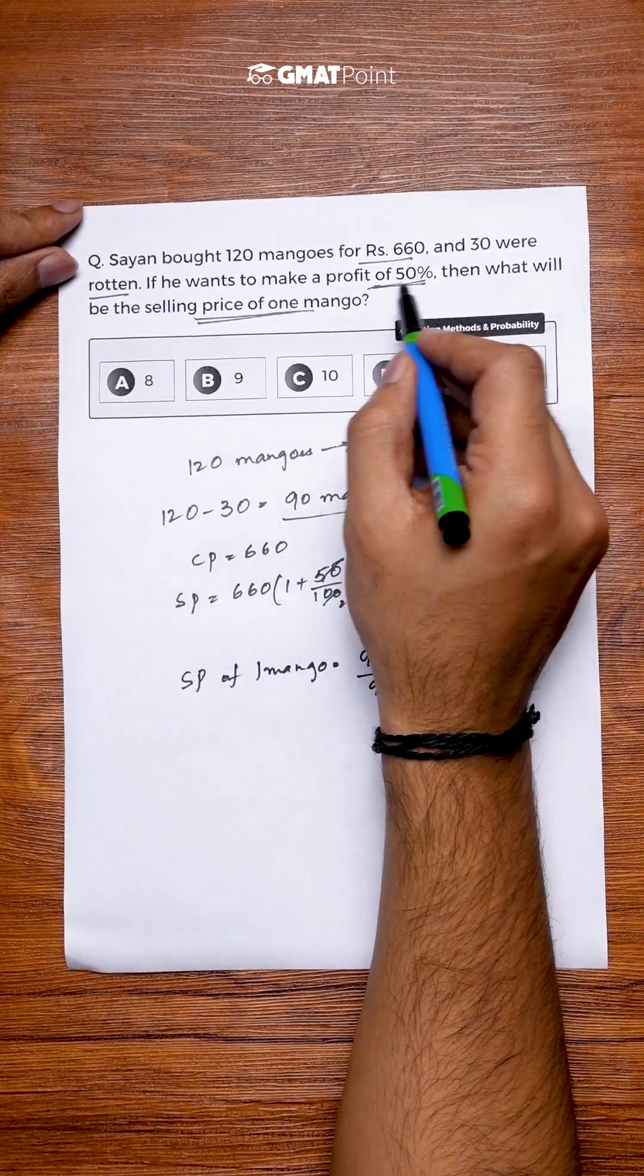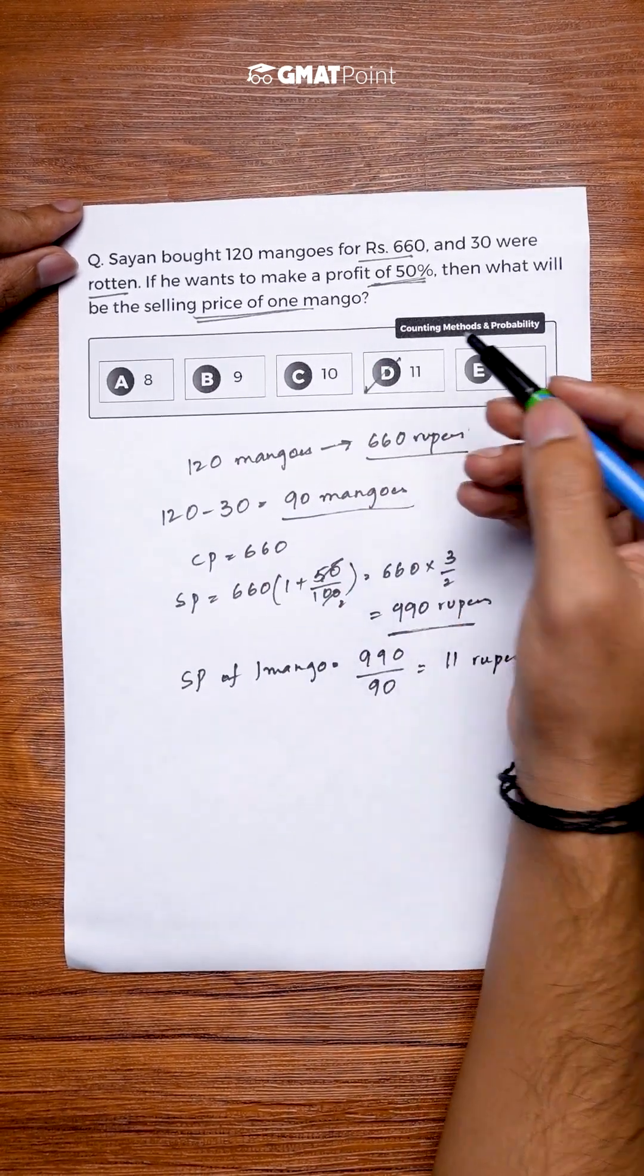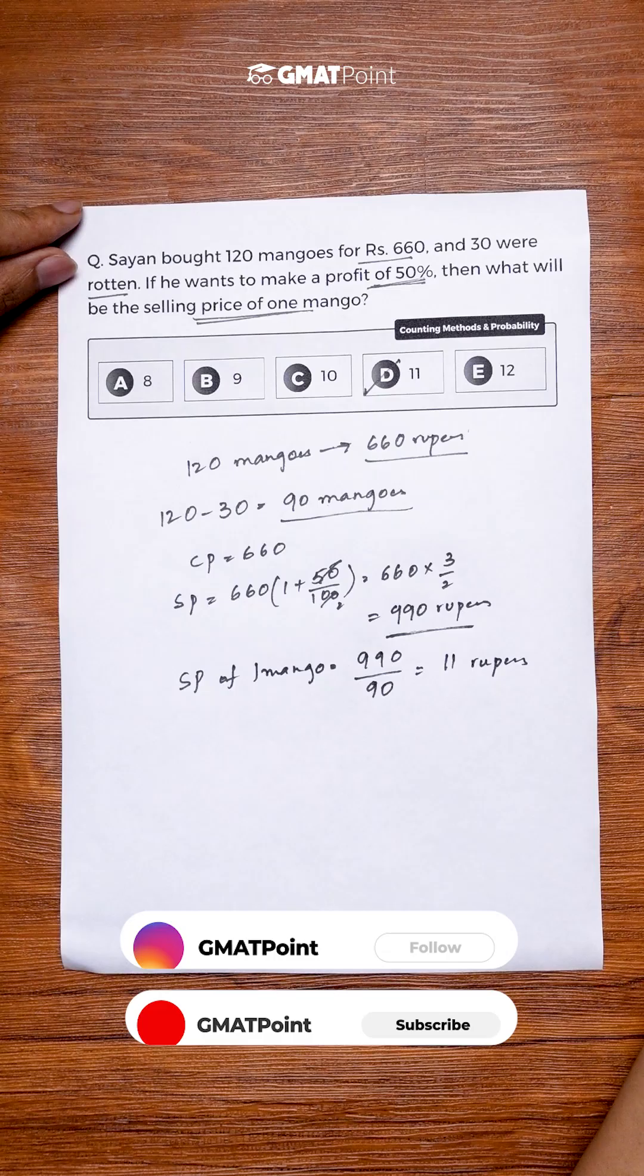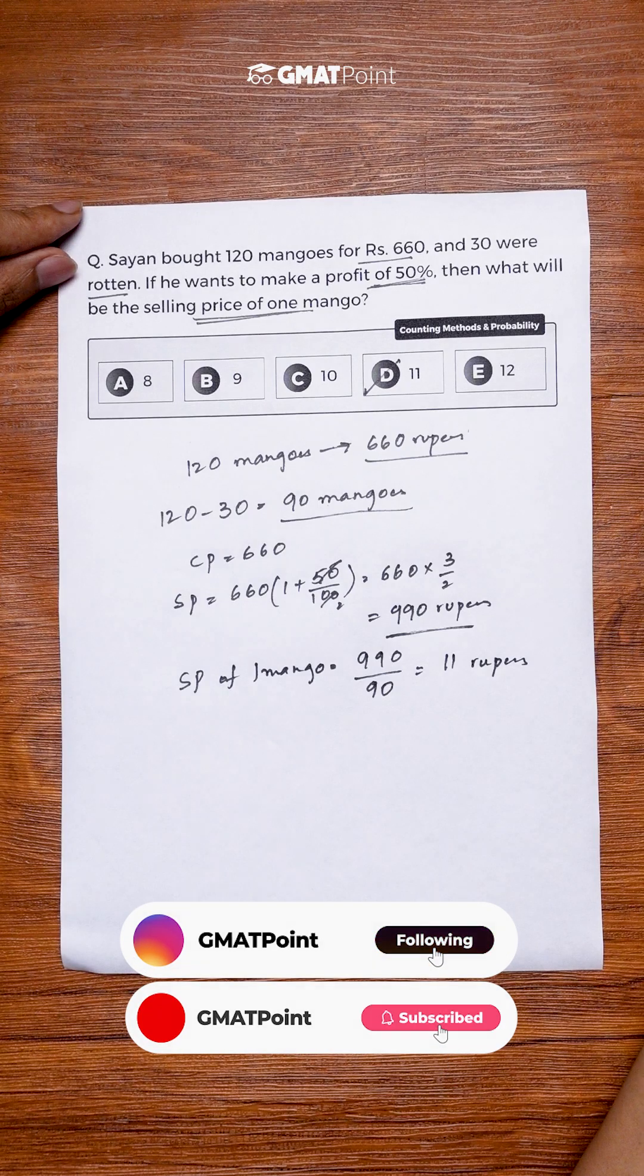So Sayan to make a profit of 50 percent, he will have to sell one mango at 11 rupees. Follow and subscribe for more videos like this.